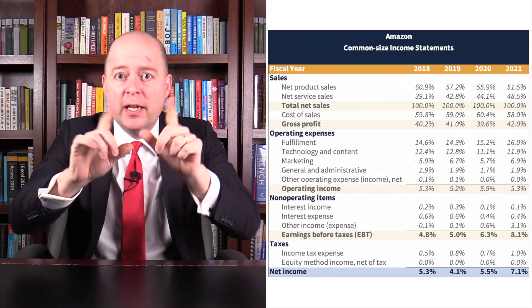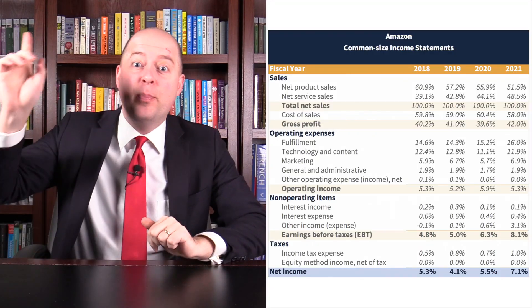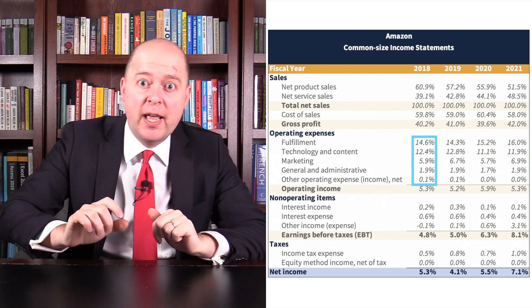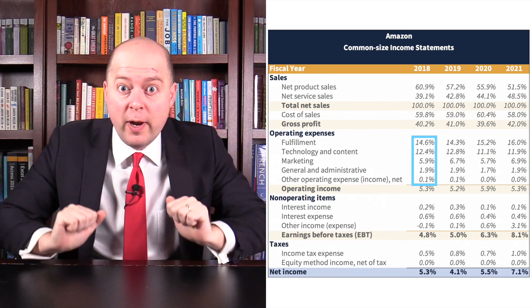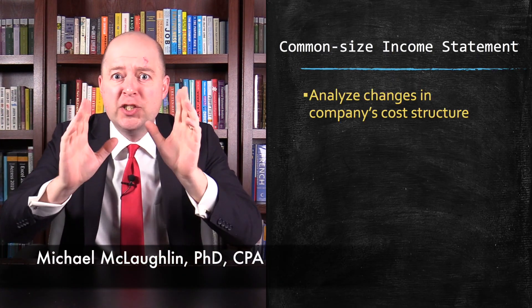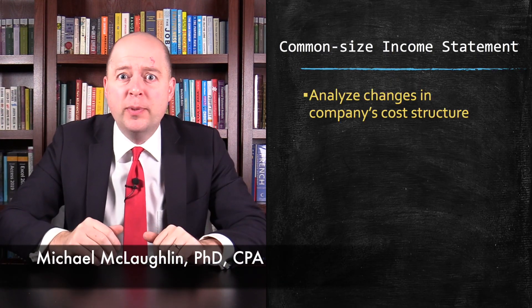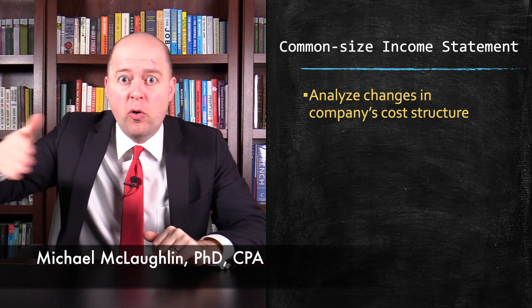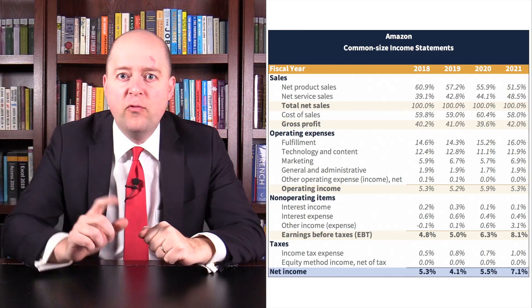A common-size income statement expresses each item on the income statement as a percentage of sales, or total revenue. This allows you to analyze changes in a company's cost structure over time.